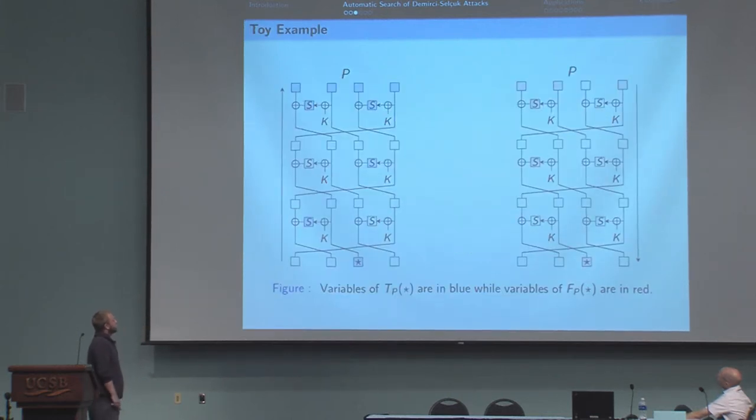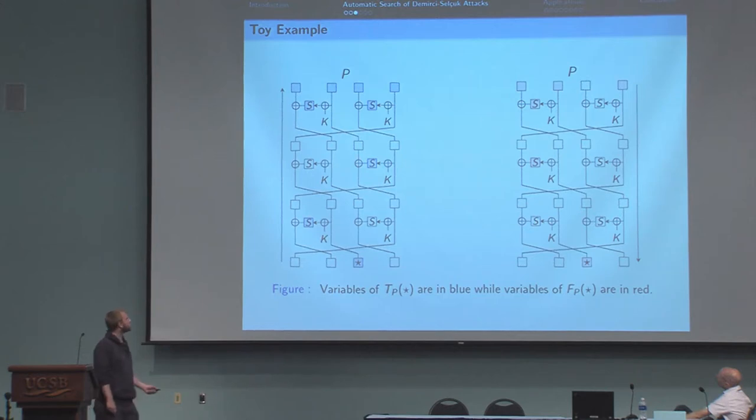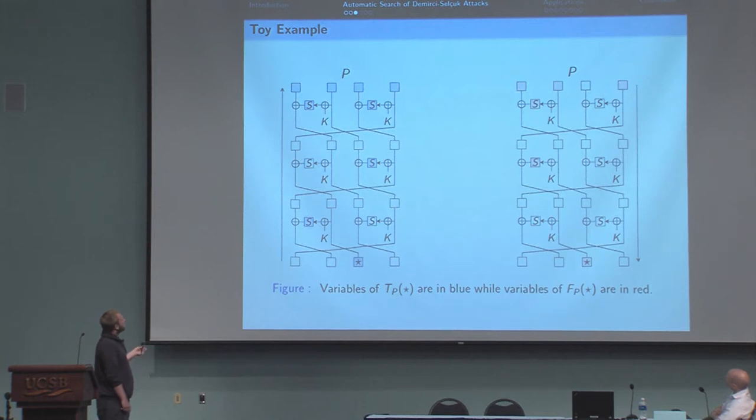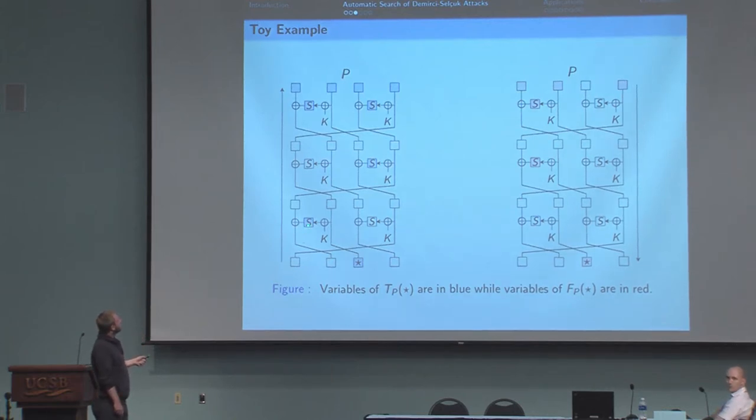Here's an example on the toy cipher, a Feistel network. On the left side, you can see an example of a set TP. What does that mean? If you know the variables which go through the blue S-boxes, then you can propagate the difference from the state variable with a star to the plaintext.